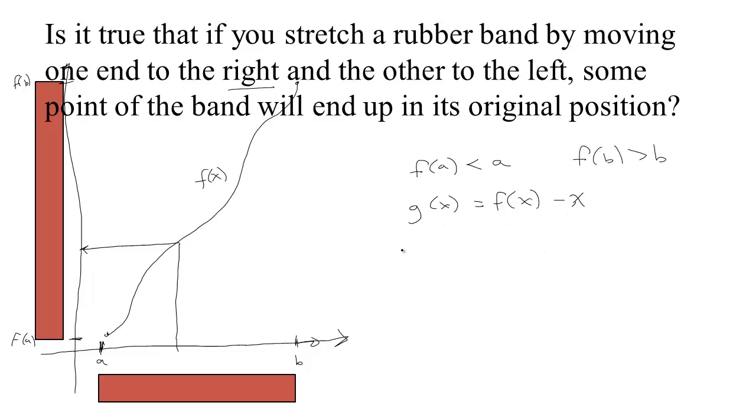And here's what I know. G of A would be F of A minus A. And I know that F of A is less than A, so if you have a number less than A, you subtract A. That's going to be less than 0.